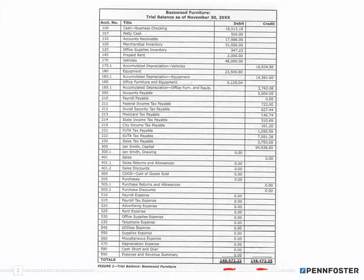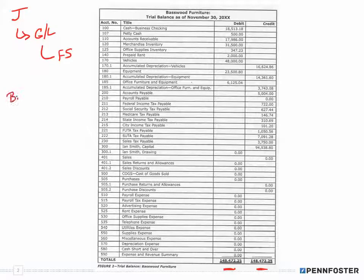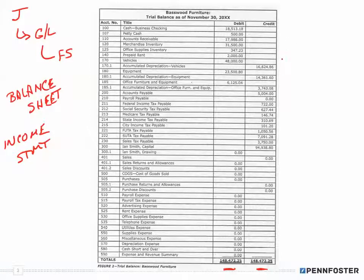When we're at the end of the accounting period and closing out the period, we're going to create financial statements. If you remember from the first framework, I talked about journal entries, which get posted to the general ledger accounts, and then we create our financial statements. The two that always get created for all businesses are the balance sheet and the income statement. You'll also see the statement of retained earnings and the statement of cash flows.